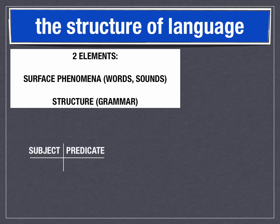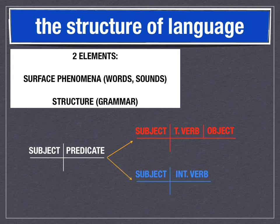All English sentences boil down to a subject and a predicate. It gets slightly more fancy: you might have a subject, a transitive verb, and an object, or a subject and an intransitive verb. But you're not going to have any sentence in English that isn't one of these two. All sentences boil down to a subject and predicate — all sentences. If they don't, they're not sentences and they don't make complete sense.